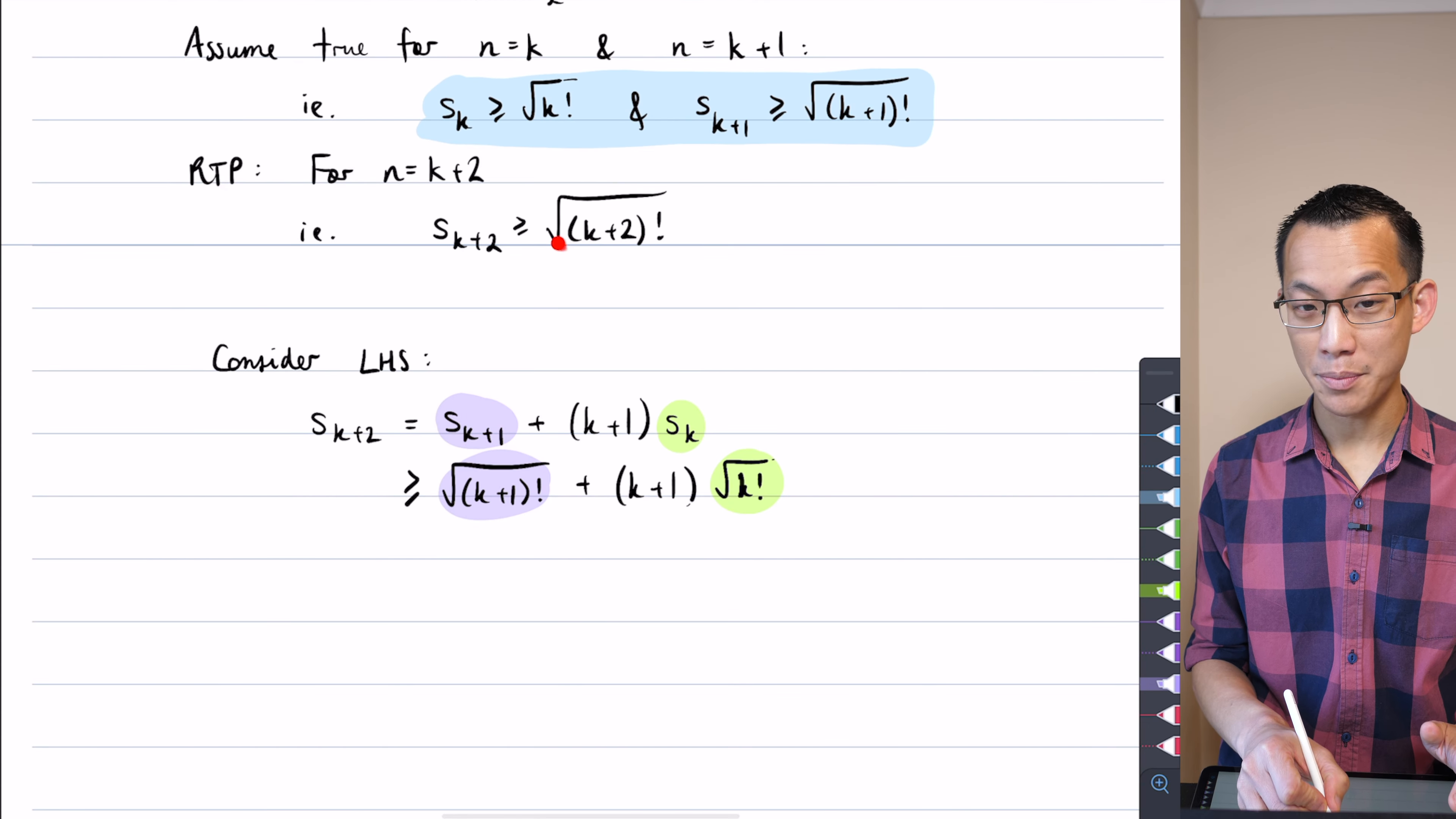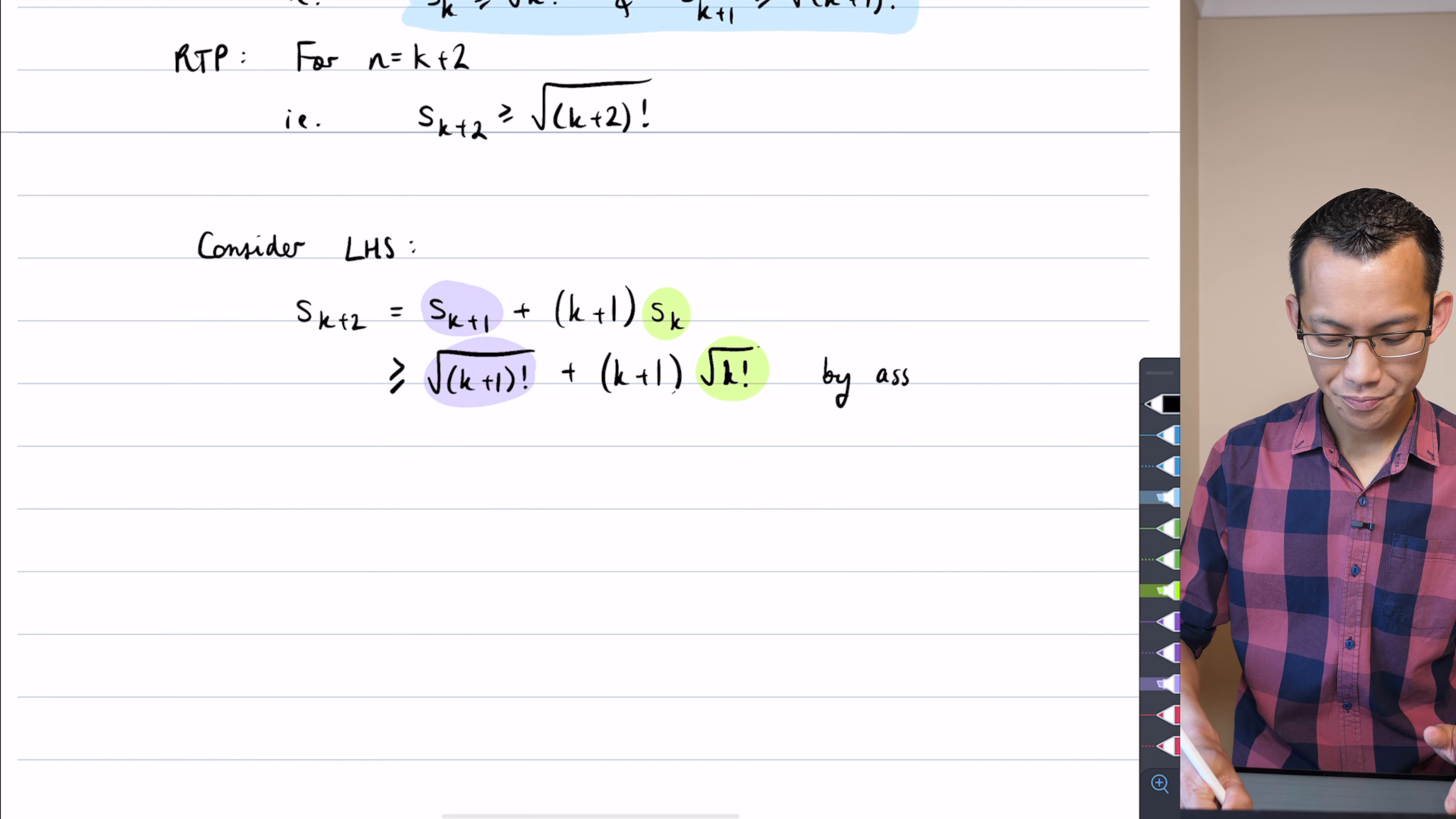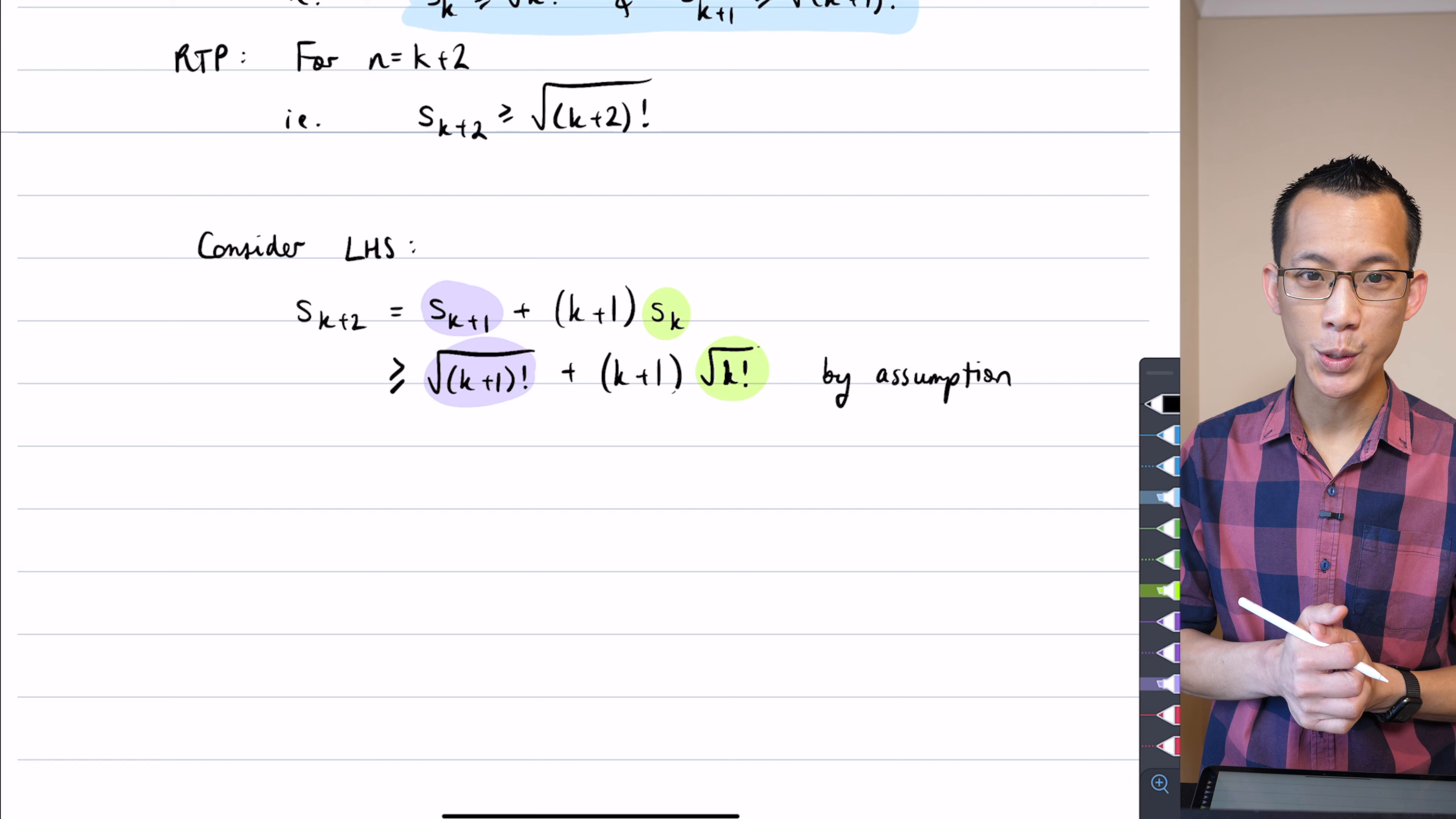Remember, this is the goal here, we want to have something like the square root of k plus 2 factorial on the right-hand side, or something bigger, because then I can just have a chain of inequalities. How am I going to do that? Well, we've already used the inductive hypothesis, I should say that, I should say by assumption. So we've already used that, so in order to try and go further, I need to either draw on some stuff I know about inequalities and real numbers and algebraic properties in general, or I look to the question for some clues.